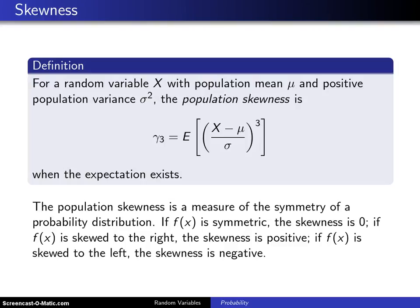The mean is the first population moment. The variance you can think of as the second moment about the mean. This slide defines something that's known as the skewness.